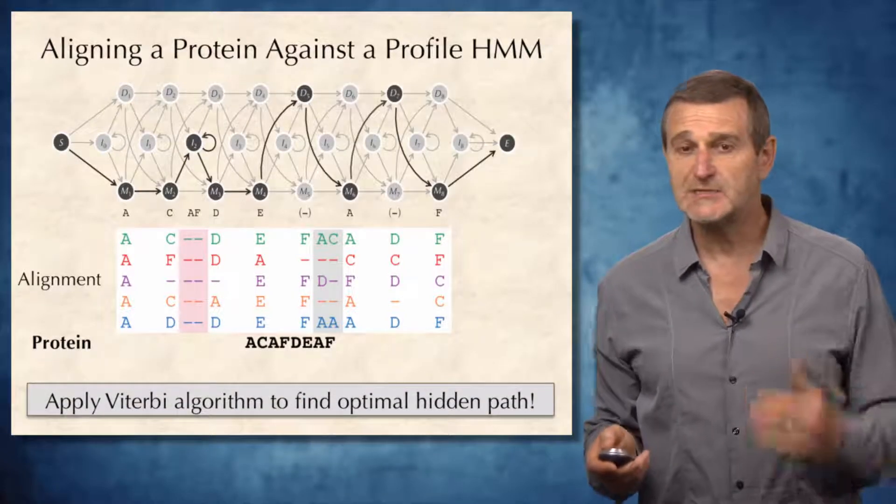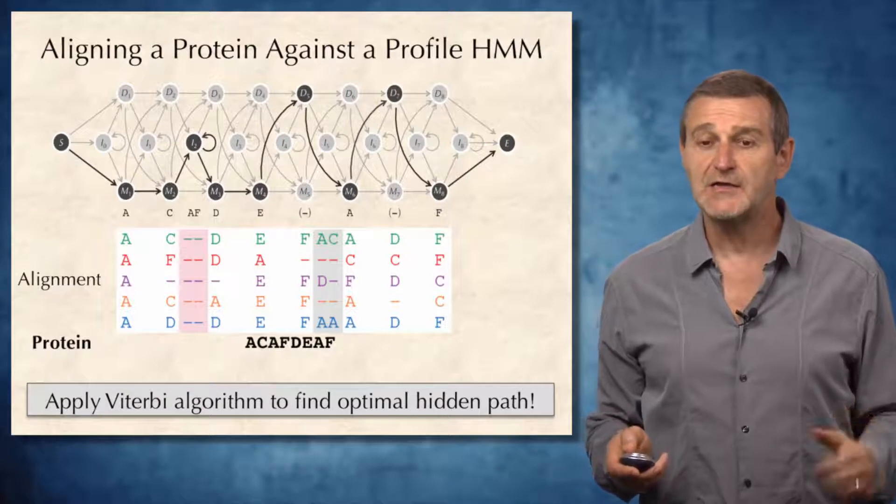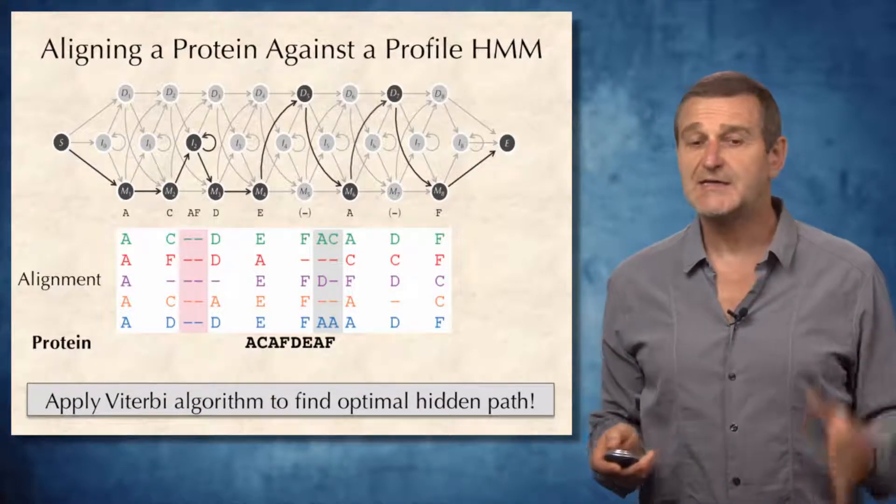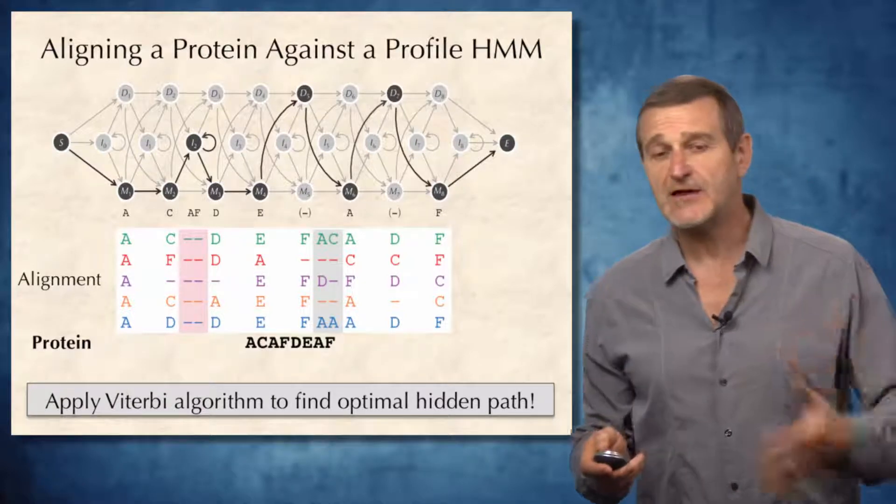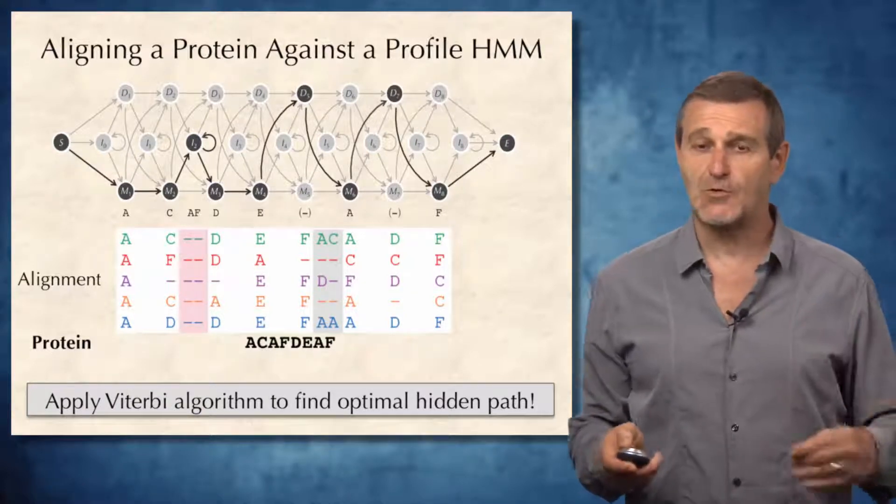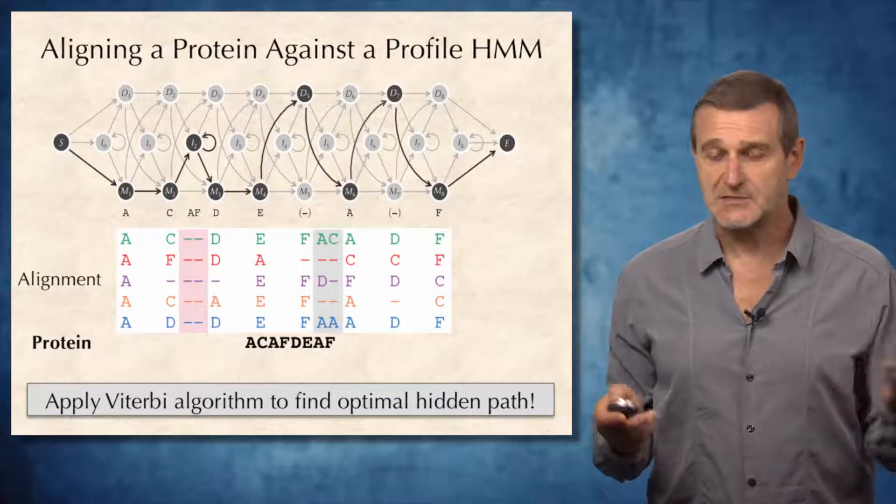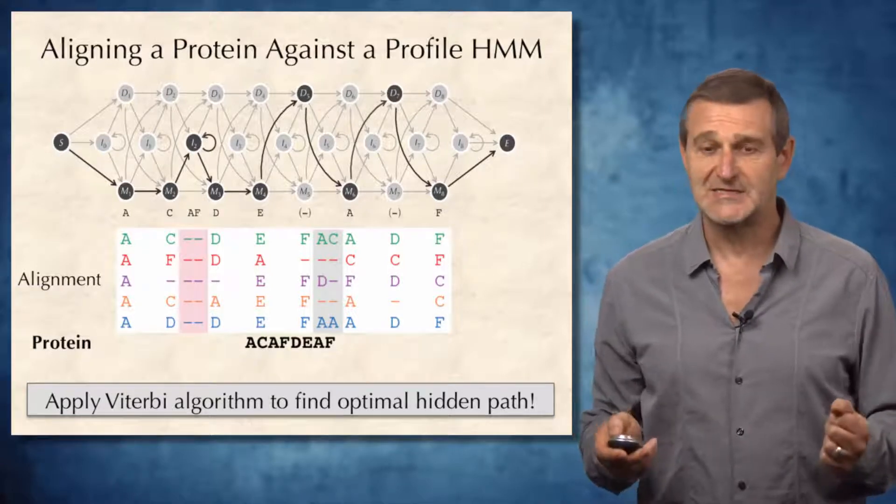The easiest thing to do is simply apply the Viterbi algorithm to find an optimal hidden path and decide whether this protein belongs to a family, depending on the probability threshold for this protein. So that's what's shown on this slide.